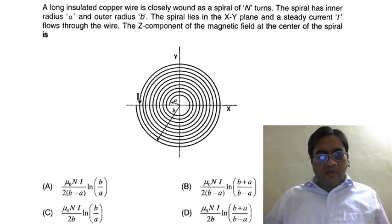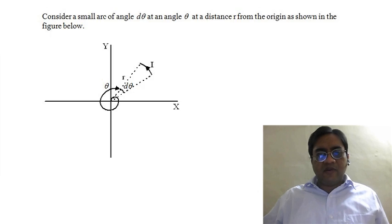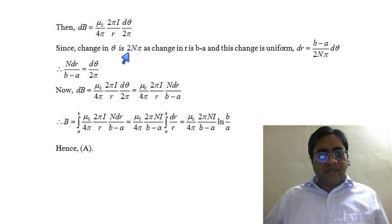Now, when we have 1 turn then the angle covered is 2π, so when there are N turns then the angle covered would be 2Nπ.